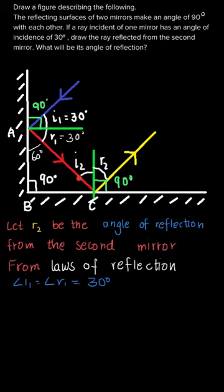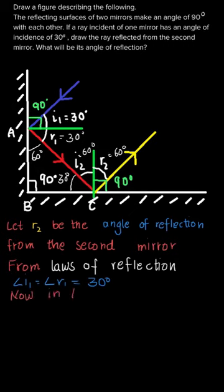So 90 plus 60 equals 150, and 180 minus 150 gives the third angle as 30 degrees. Since this angle is 30 degrees and the normal gives 90 degrees, i2 equals 90 minus 30, which is 60 degrees. By the law of reflection, angle of incidence equals angle of reflection, so i2 equals r2, meaning r2 is also 60 degrees.